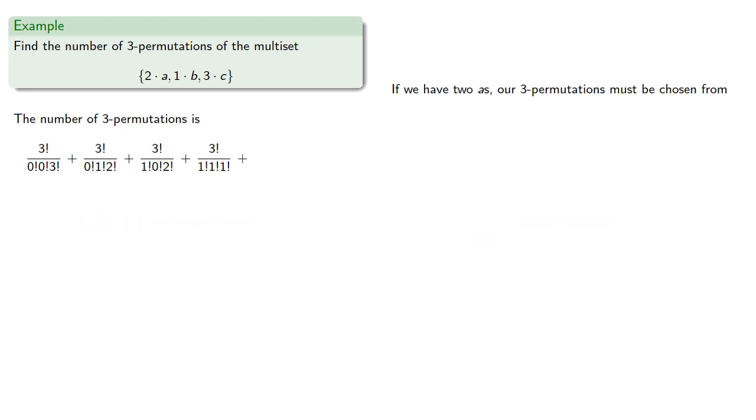If we have 2 a's, then our 3 permutations must be chosen from the appropriate multiset, giving us more permutations, and this sum will give us the number of 3 permutations of this multiset.